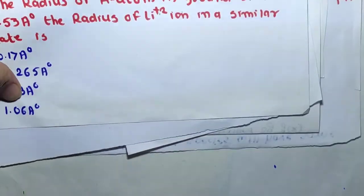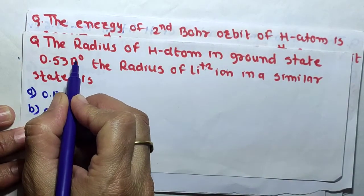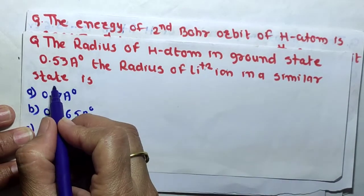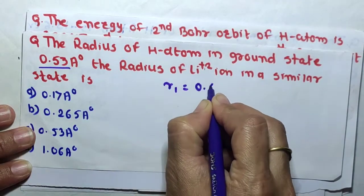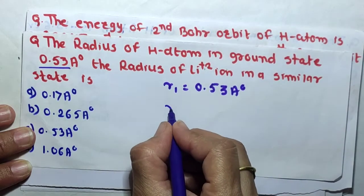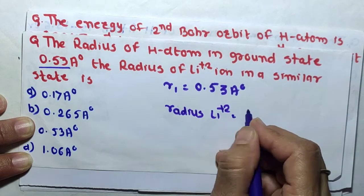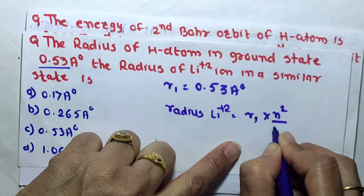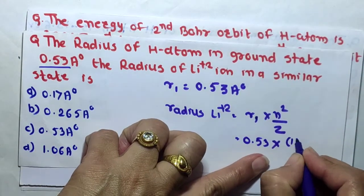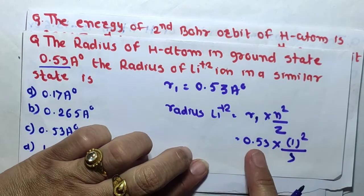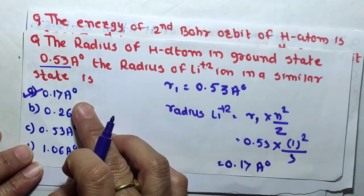MCQ 1: The radius of hydrogen atom in ground state is 0.53 Å. The radius of lithium Li²⁺ ion in a similar state is? Since R1 = 0.53 Å for ground state (n = 1), and lithium has atomic number Z = 3, we use: R = R1 × n²/Z = 0.53 × 1²/3 = 0.53/3 = 0.17 Å. Therefore option 1 is the correct answer.